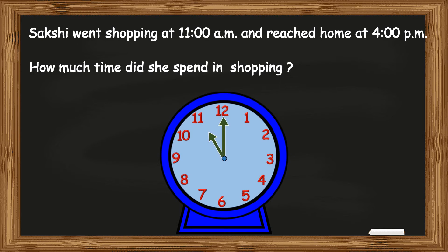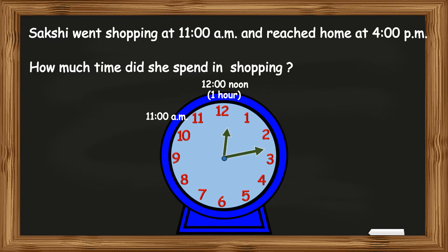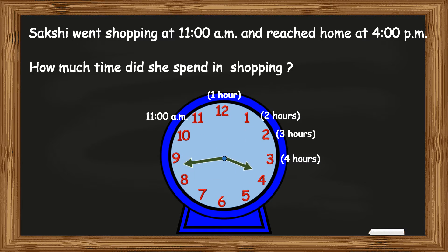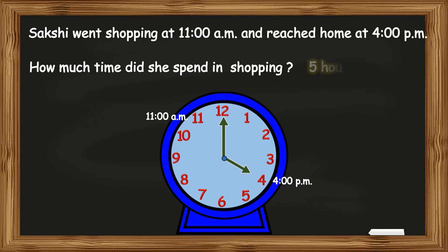Sakshi went at 11 a.m. One hour after 11 a.m. it was 12 noon. One hour after 12 noon the time was 1 p.m. and Sakshi had been shopping for 2 hours. By 2 p.m. it was 3 hours. By 3 p.m. it was 4 hours. And by the time Sakshi reached home at 4 p.m. she had been shopping for 5 hours.